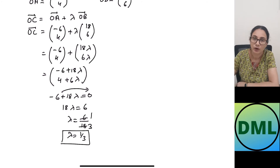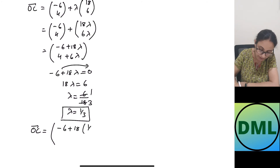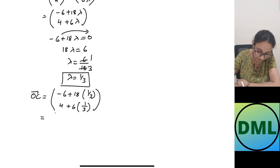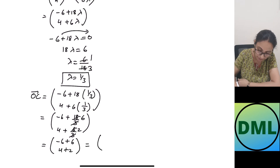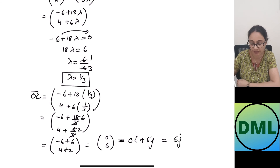Now substituting lambda equals 1/3 to find vector OC: the i component is −6 + 18 times (1/3) equals −6 + 6 = 0. The j component is 4 + 6 times (1/3) equals 4 + 2 = 6. So OC is (0, 6). Written in i and j form, that is 0i plus 6j, which equals 6j. The vector OC is given by 6j.